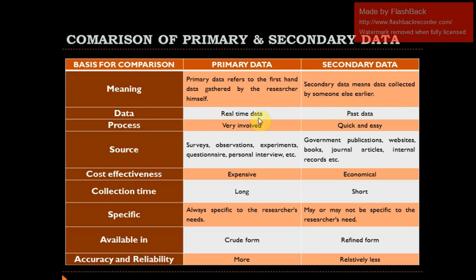Here we have a comparison chart. The basis for comparison includes the type of data. Primary data means real-time data — the latest data collected at the time of the situation. But secondary data means past data — data that already existed. We collect secondary data by going through websites, the internet, or books to collect material that you have not collected by yourself.